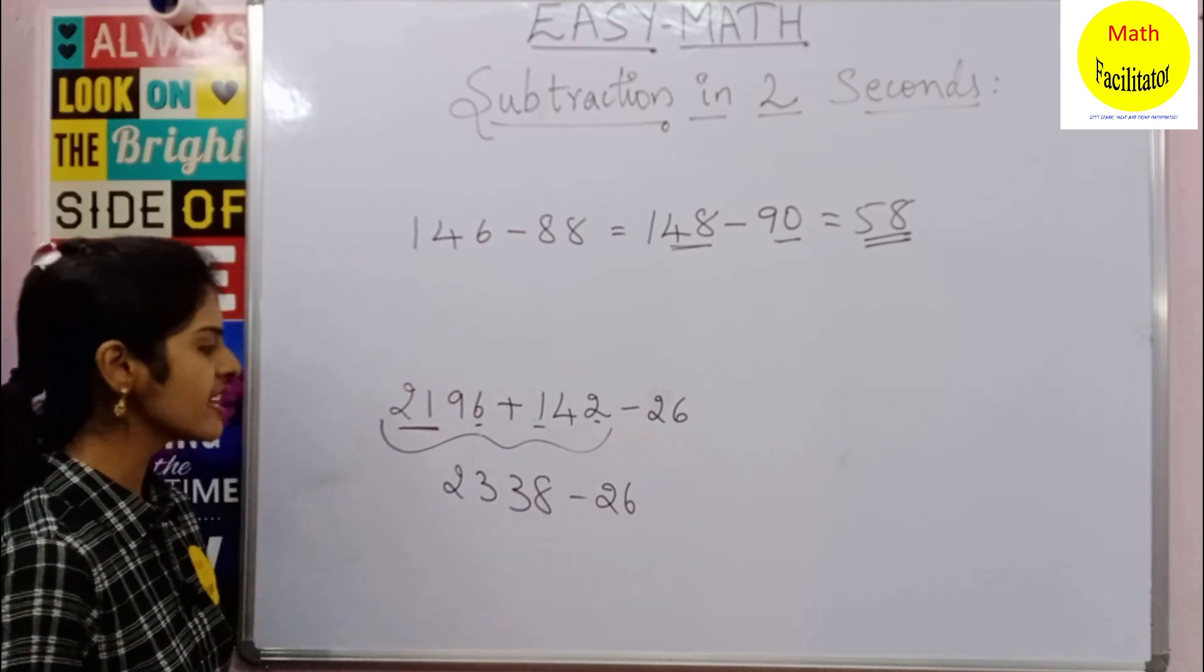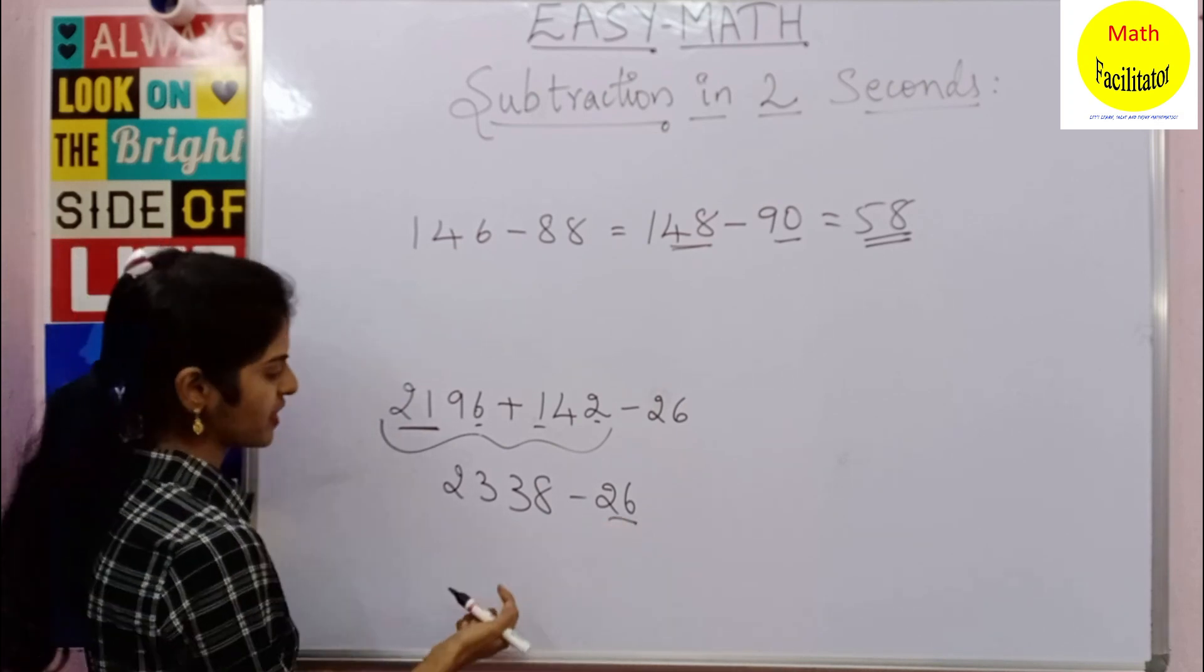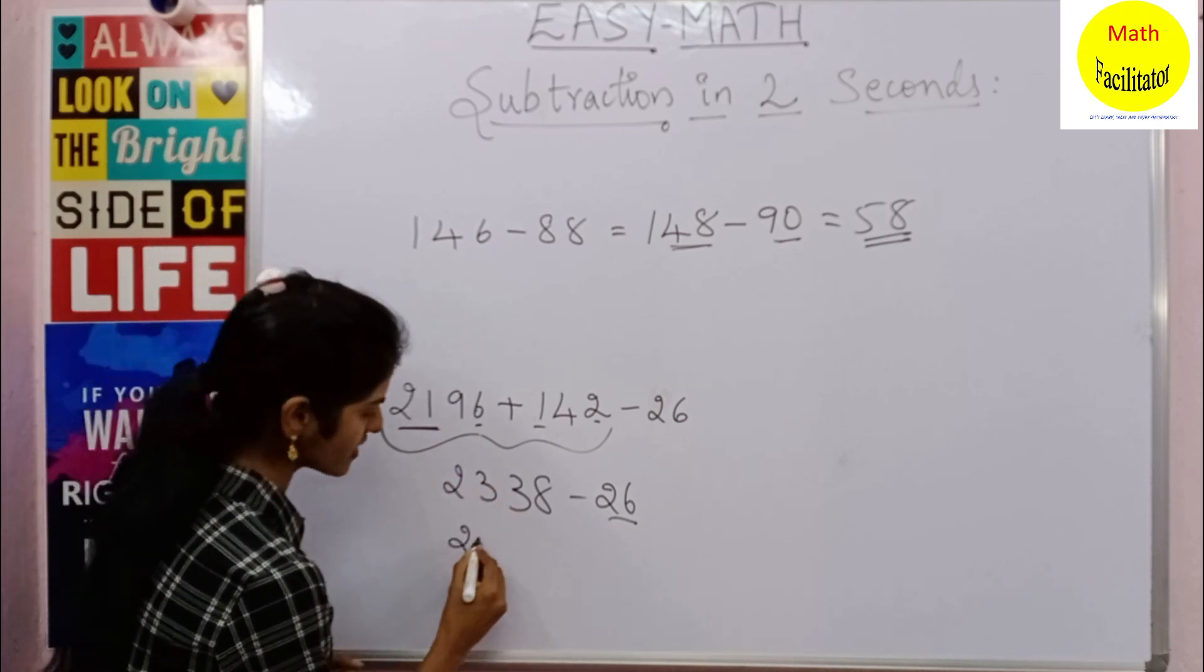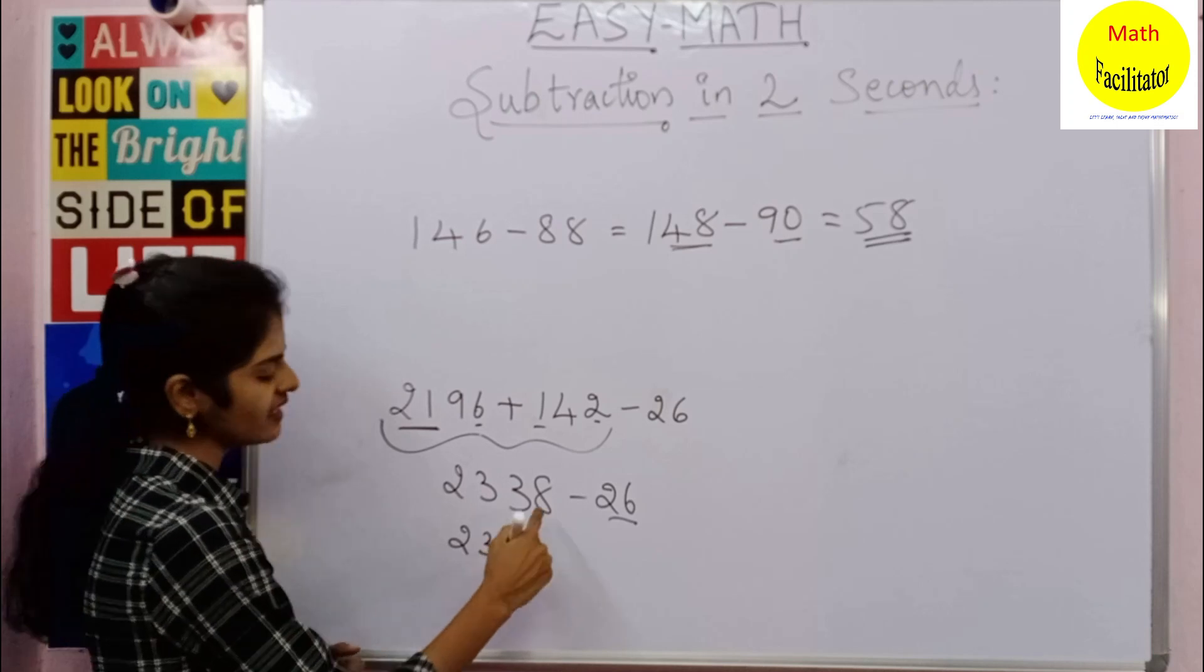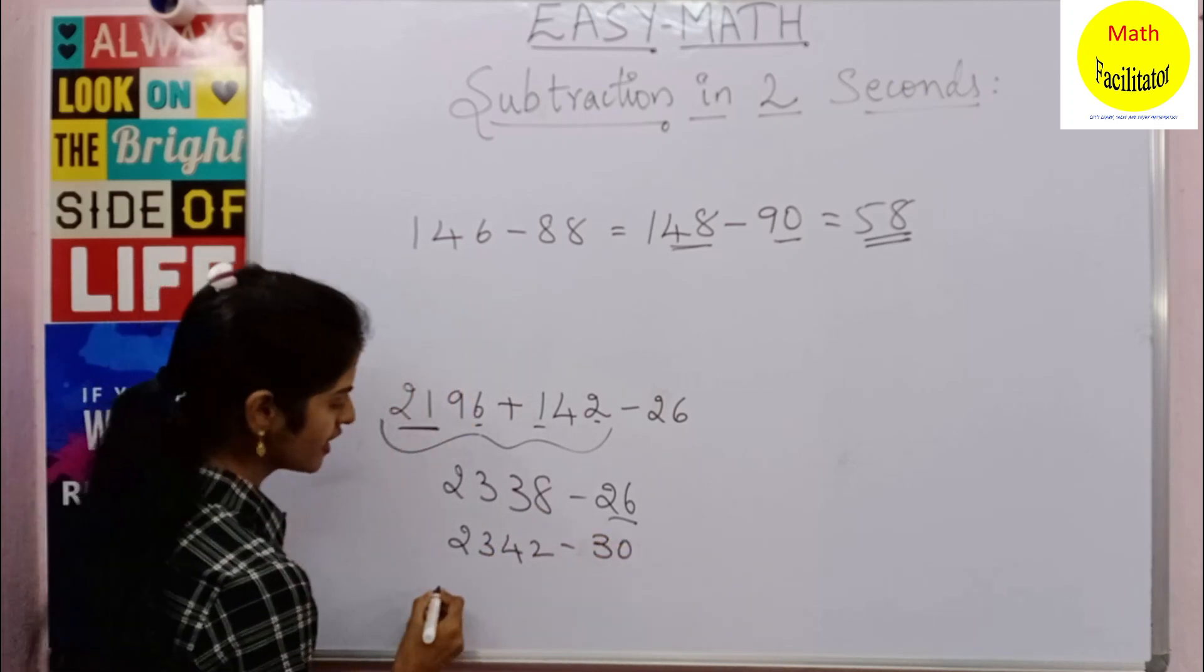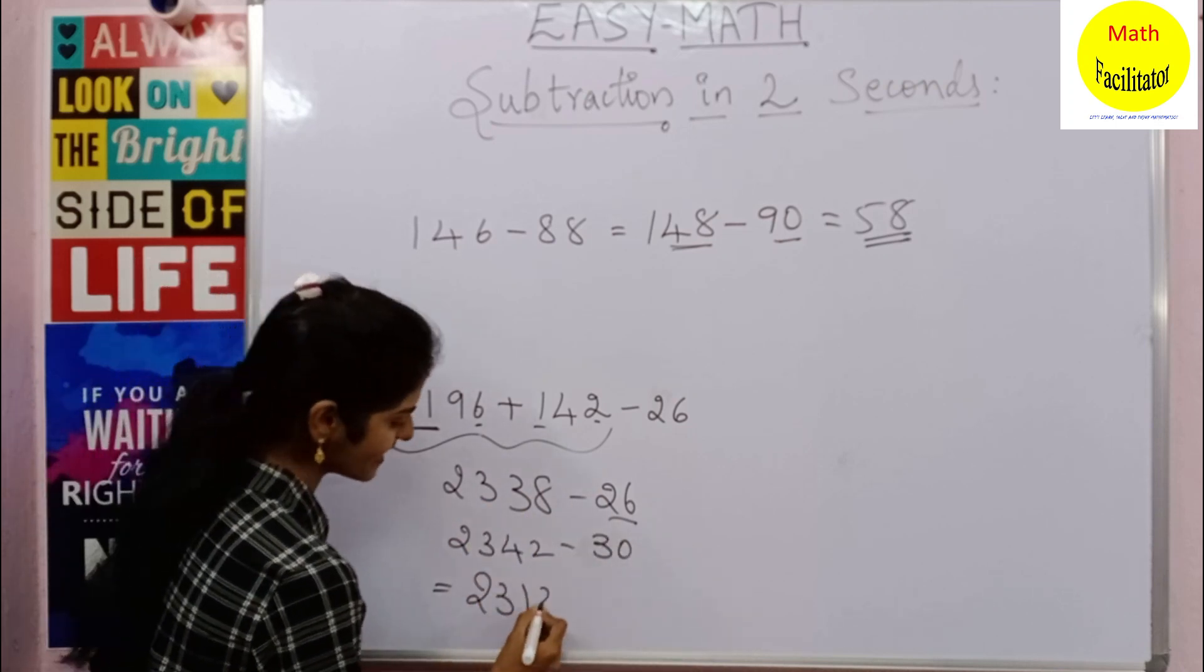Similarly, I'll add 4 in the first number. So it is 2338 plus 4, adding 4 here will give you 2342 minus 30. So 2342 minus 30 is nothing but 2312.